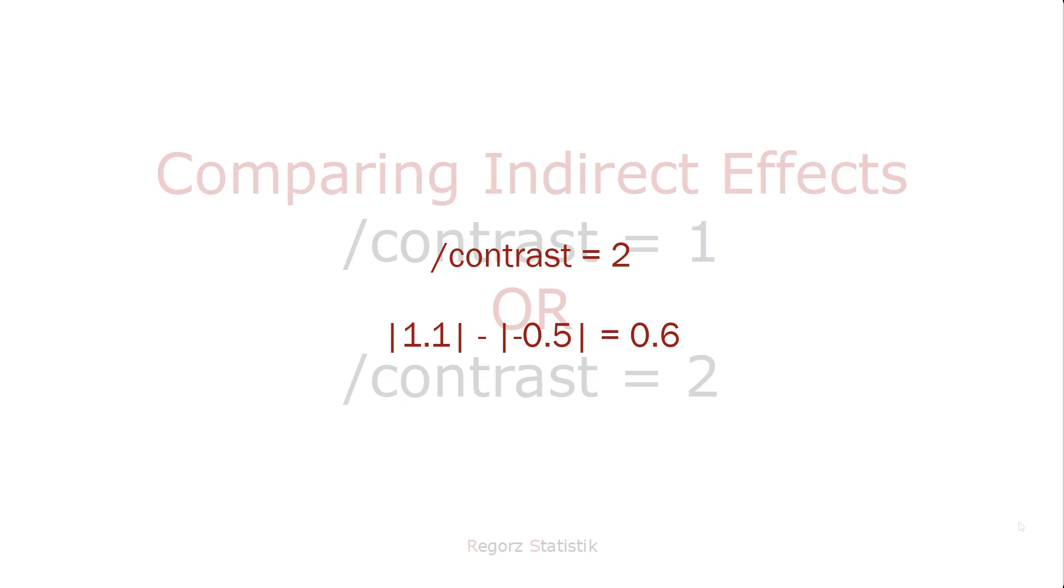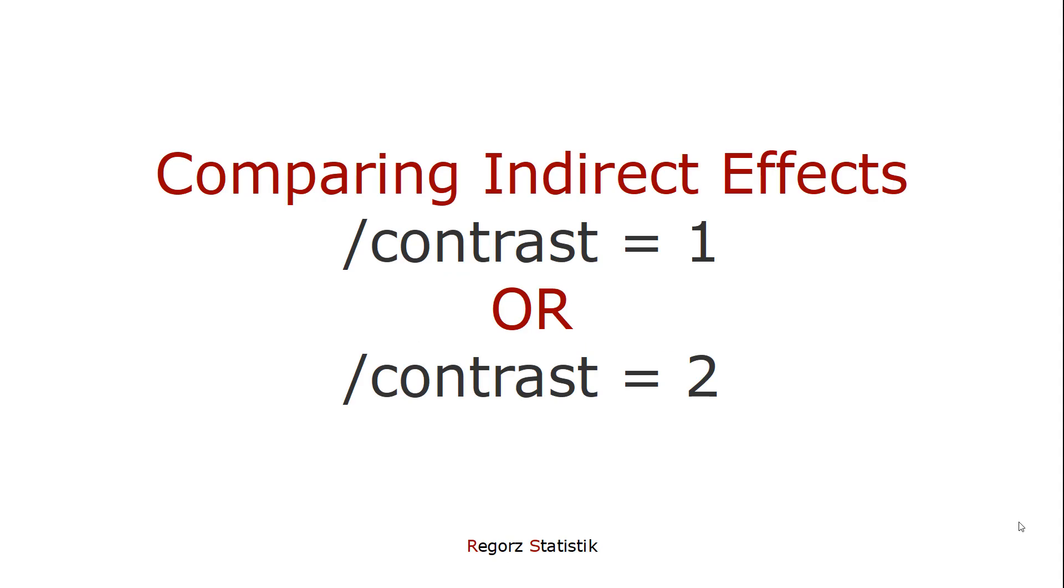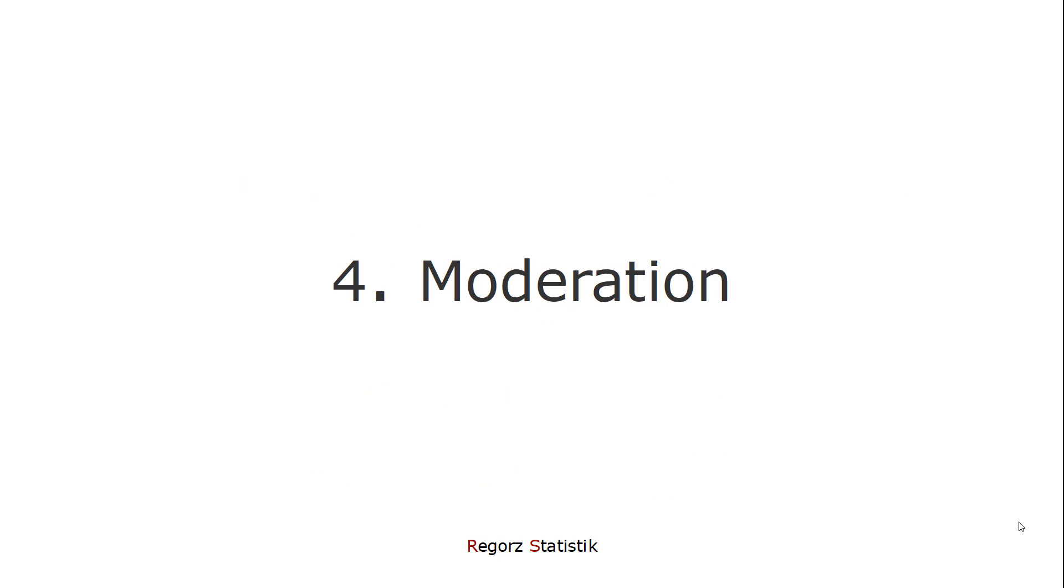If, in this case, you wanted to compare the absolute values, then you would use contrast equals 2, because then you would compare 1.1 to 0.5, that is, the difference of 0.6. So contrast equals 2 only makes sense if you expect contrasts with different signs.